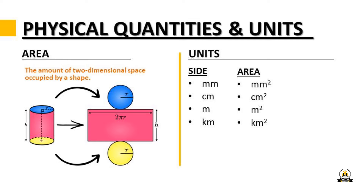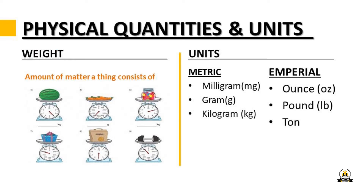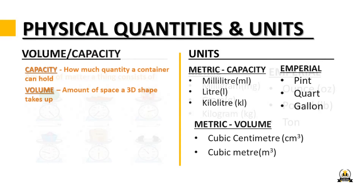The next physical quantity is mass. Most people call it weight, but scientifically that's not correct. Mass is the amount of matter a thing consists of. For instance, when you buy fruits at a supermarket and put them on a scale, the price is based on their mass. In the metric system, mass is measured in milligrams, grams, or kilograms. In the imperial system, it's ounce, pound, and ton.